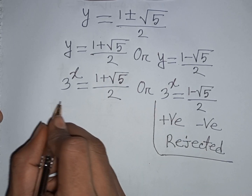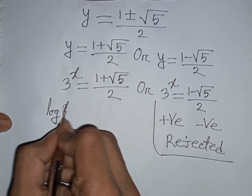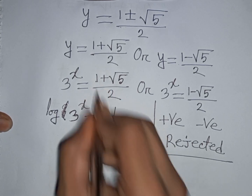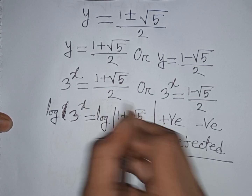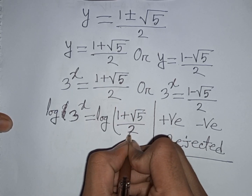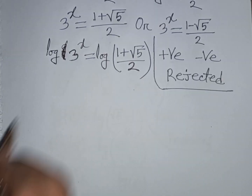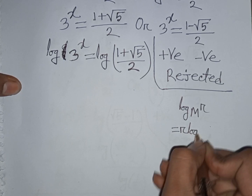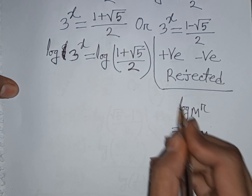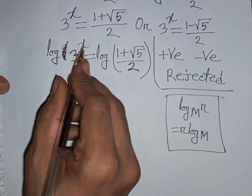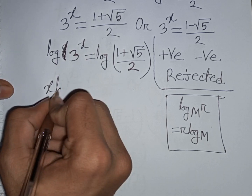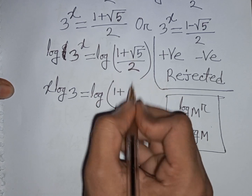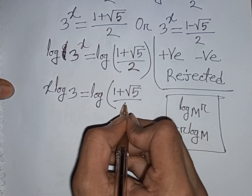From the valid equation, we take the logarithm of both sides: log of 3^x equals log of (1 plus square root of 5) divided by 2. Applying the logarithm power rule that log(m^r) equals r·log(m), the exponent x moves to the front, giving x·log 3 equals log of (1 plus square root of 5) divided by 2.